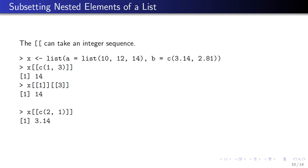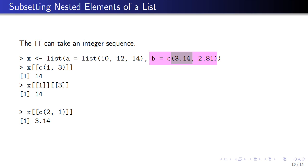The double bracket operator can take an integer sequence rather than a single number, which lets it recurse into a list. For example, if the first element of a list is itself another list with elements 10, 12, and 14, and I want to extract the number 14 — that's the third element of the first element — I can pass the vector c(1, 3) to x using the double bracket operator. That's equivalent to double-subsetting with 1 and then 3. I can also extract the first element of the second element by passing the integer vector c(2, 1) to get 3.14.